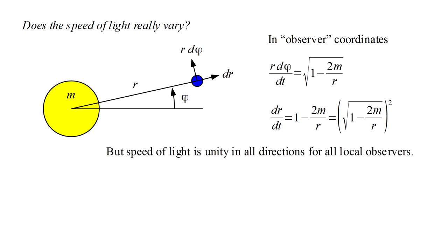But in video 10b, we saw that the speed of light is unity in all directions for all local observers. Therefore, for a local observer, light should move one unit of distance in one unit of time.